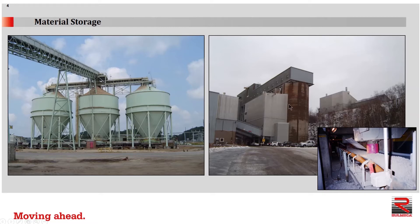Here we see several silos used at an iron ore mine in Minnesota. The silos store the taconite ore. They are loaded by a standard troughing belt conveyor at the top, and down below you can see the close-up of a typical drawdown point. Material is removed from the silo through the drawdown point and taken away continuously by a troughing belt conveyor.